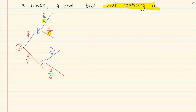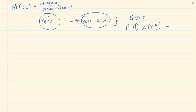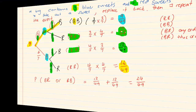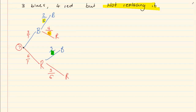Can you see how the probability changed slightly? Because I did not replace them. When you take out and put it back — when you replace — the denominators do not change; at all times I had seven. But when you are not replacing: number one, the denominator decreases by one; and number two, the numerator will also change depending on what you took out.